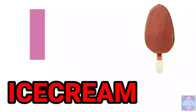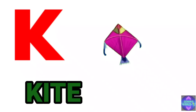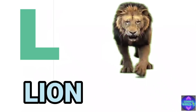I. I for ice cream. J. J for jug. K. K for kite. L. L for lion.